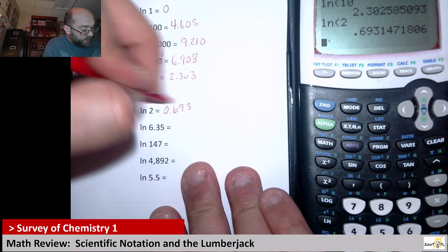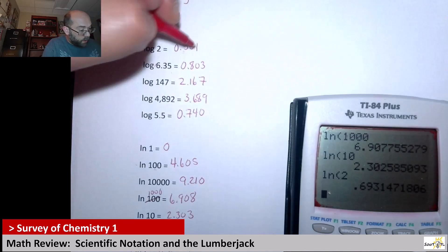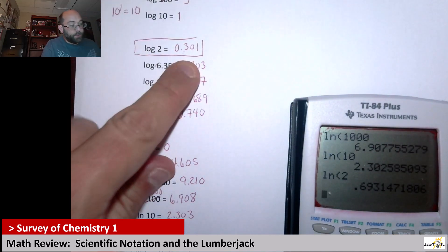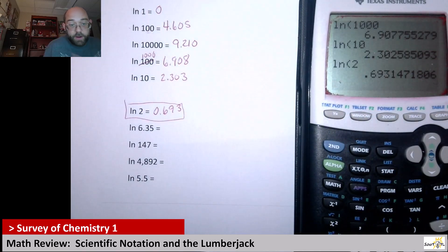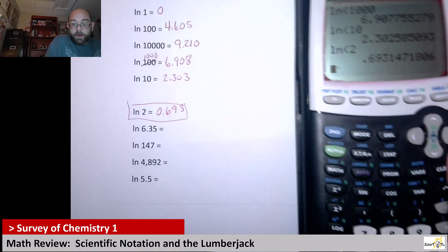Now, pay attention to this natural log of 2 versus the log of 2. Log of 2 was 0.3. Natural log of 2 is 0.6 or 0.7 if I rounded it. So let's keep going here.